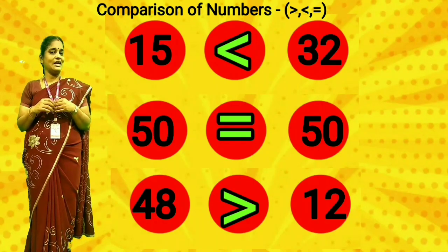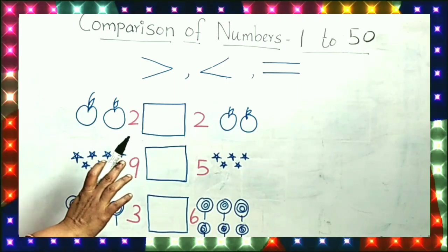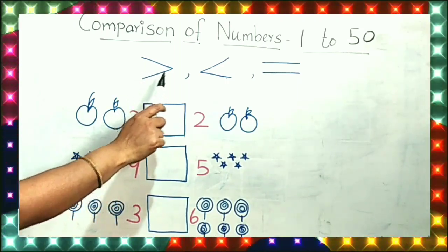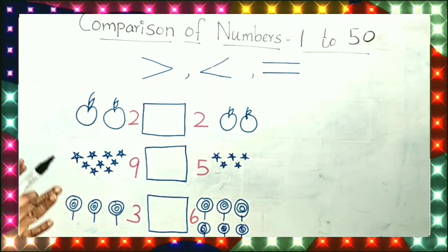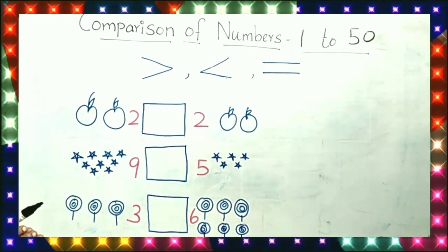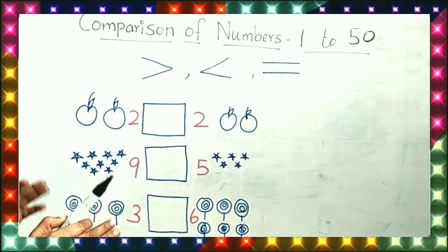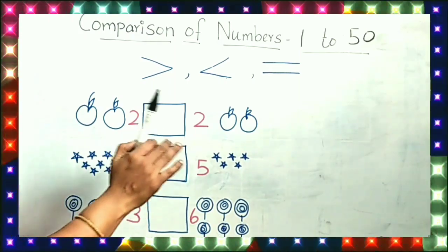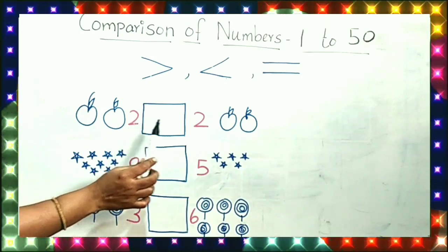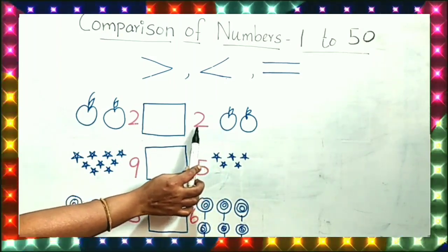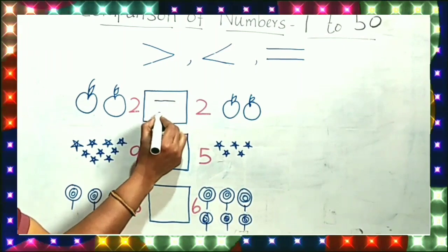Now how to write — I will show you how to compare with objects. Greater than symbol, lesser than symbol, and equal to symbol. What I said: crocodile will open their mouth on the bigger side only. You all want more chocolate or less chocolate? You all want more chocolate, right? Like that, crocodile also wants more. Which side has more number or more objects, that side the crocodile will open the mouth. How many apples here? Two. This side, how many apples? Two. Both the sides are equal. Now what symbol will come? Equal to symbol.